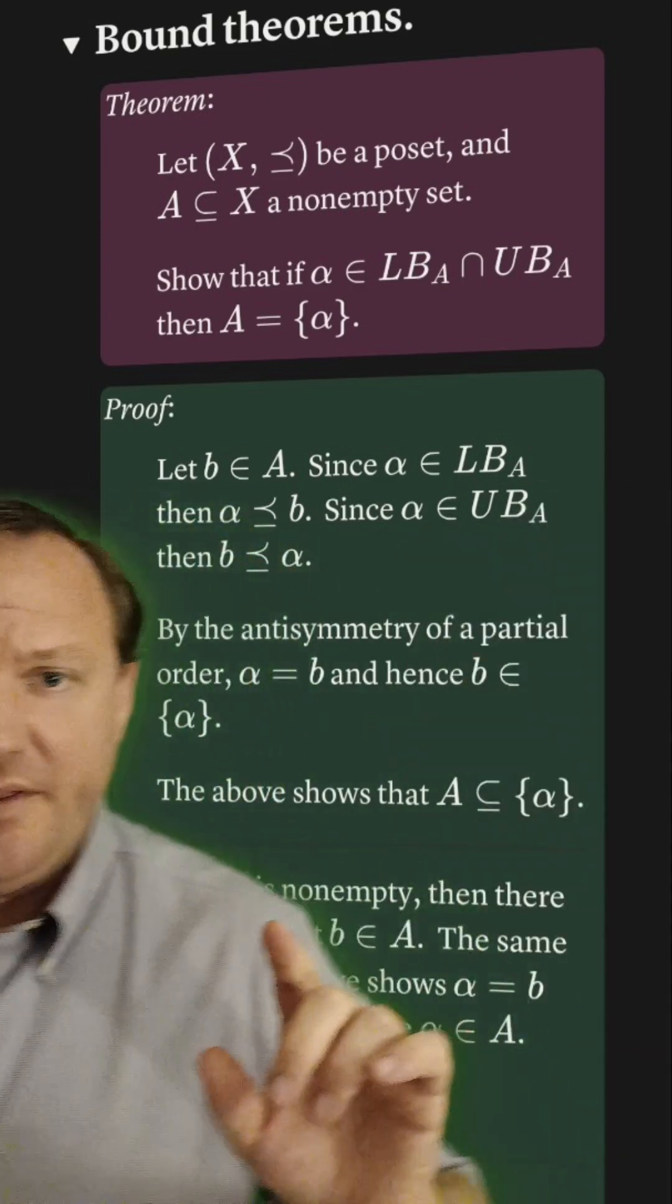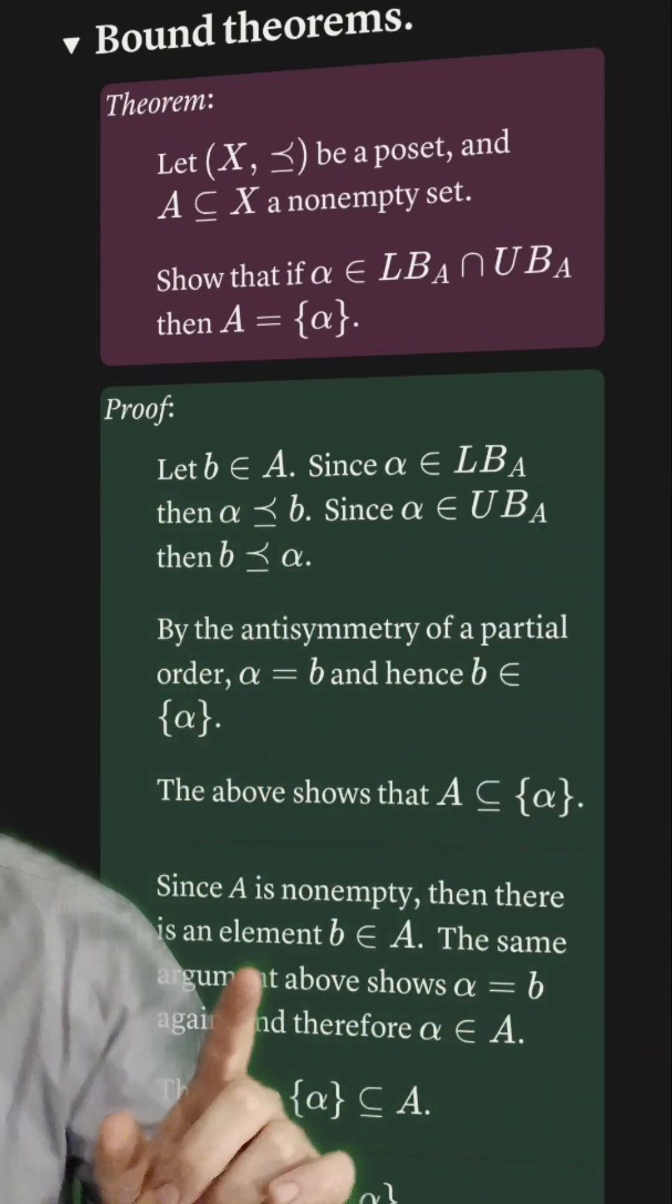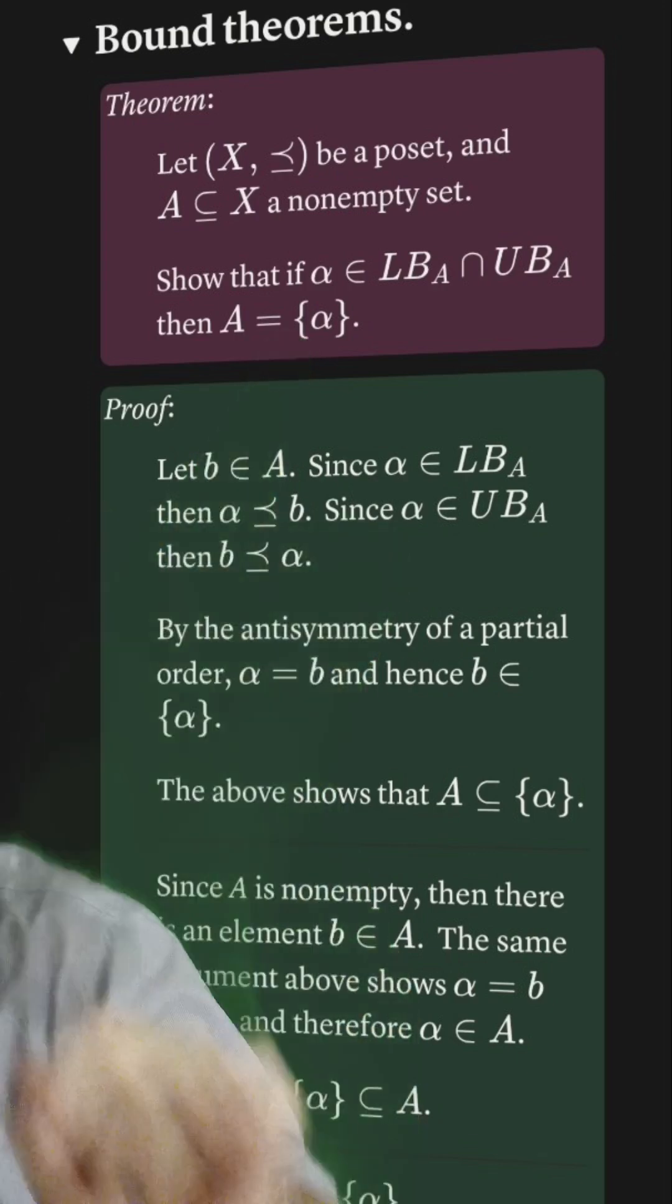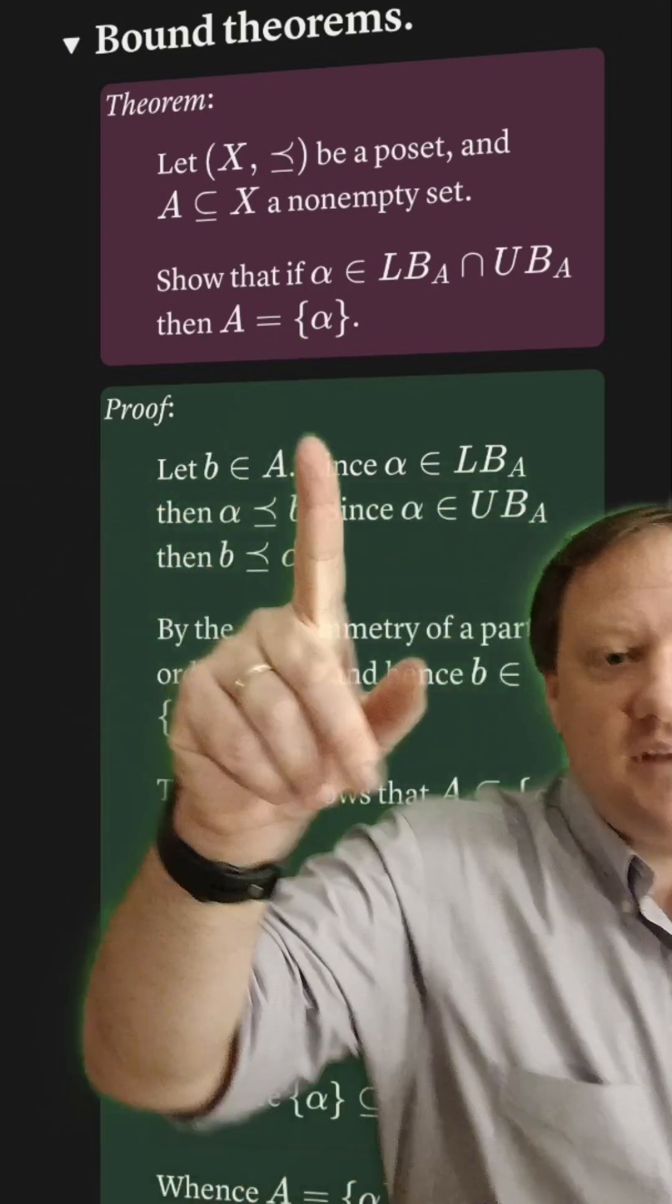Next, we're going to prove containment in the other direction, so we take an arbitrary element from the singleton. Of course, that's just alpha. We want to show that it's contained within A.